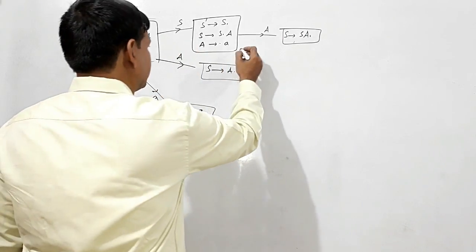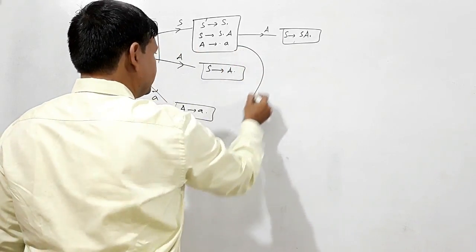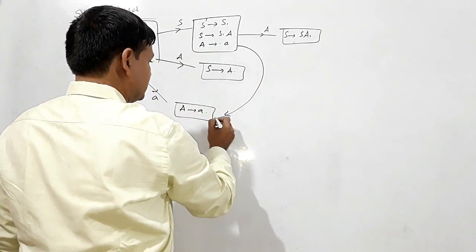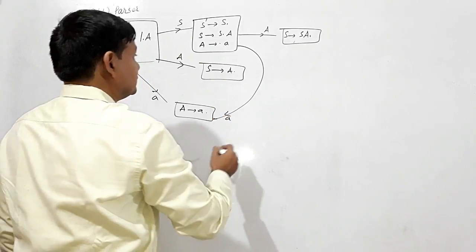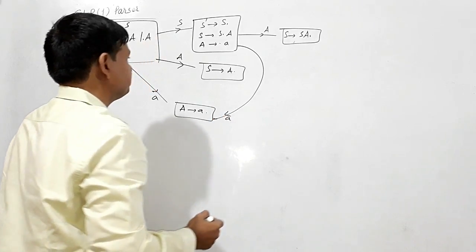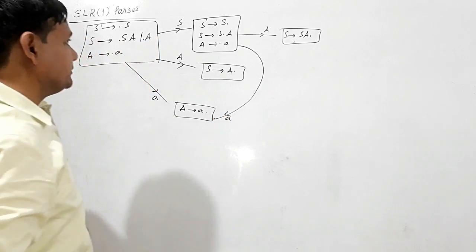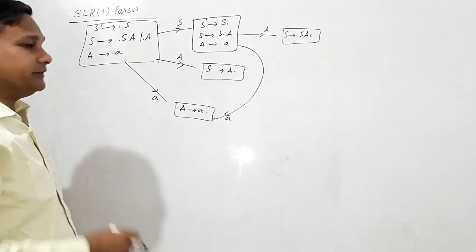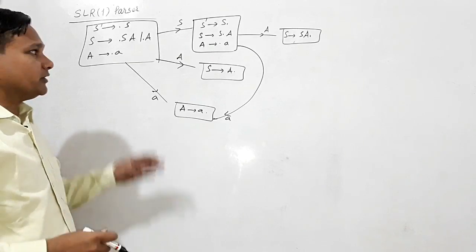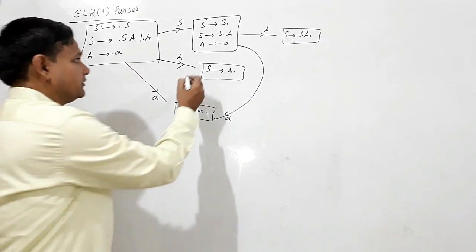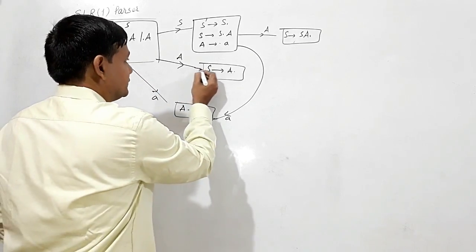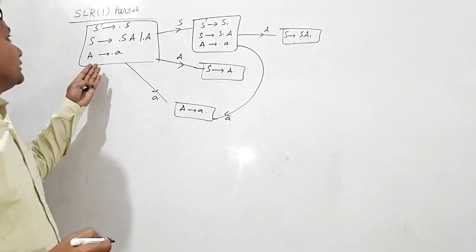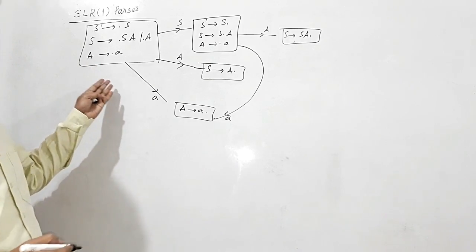If I read capital A, S will give me SA dot. If I read small a, it will be reaching the same state. Nothing more is to read here. The state diagram is the same as in LR(0).